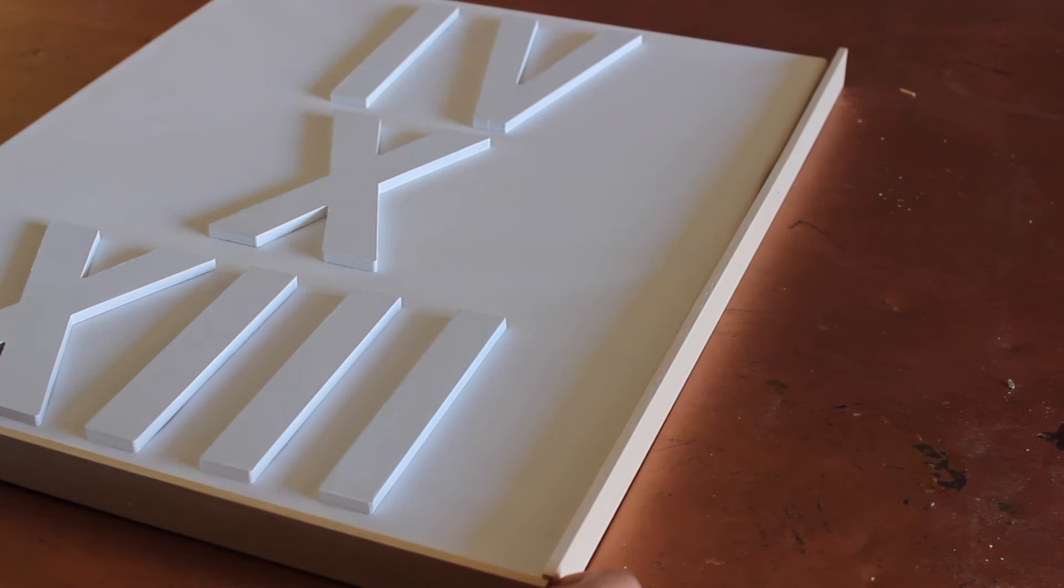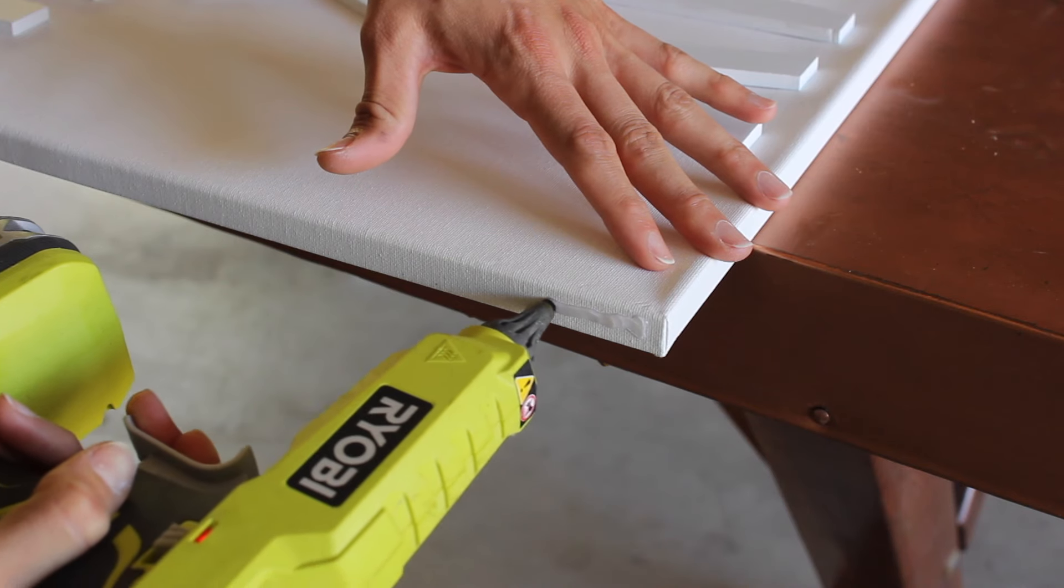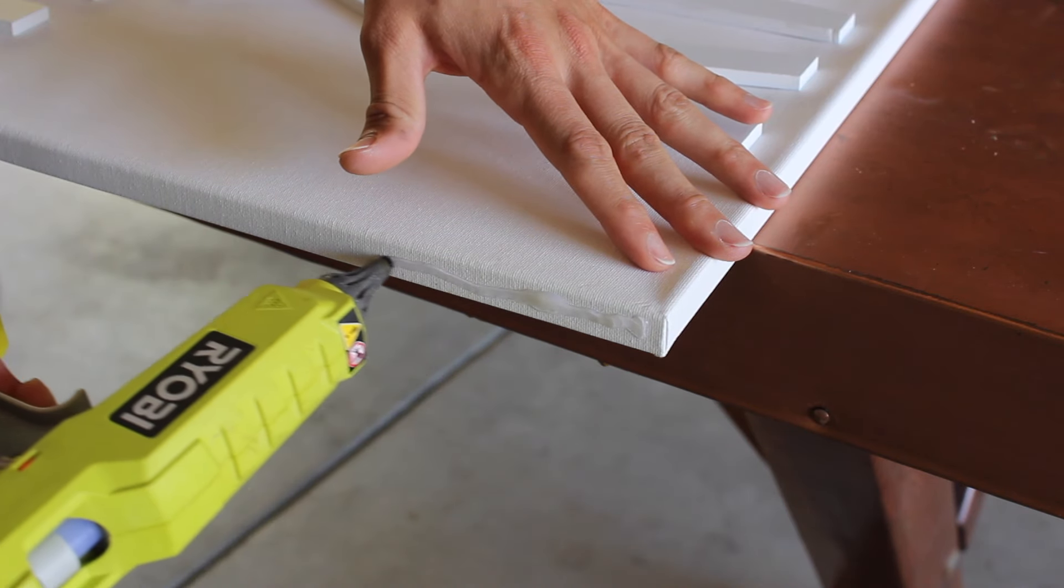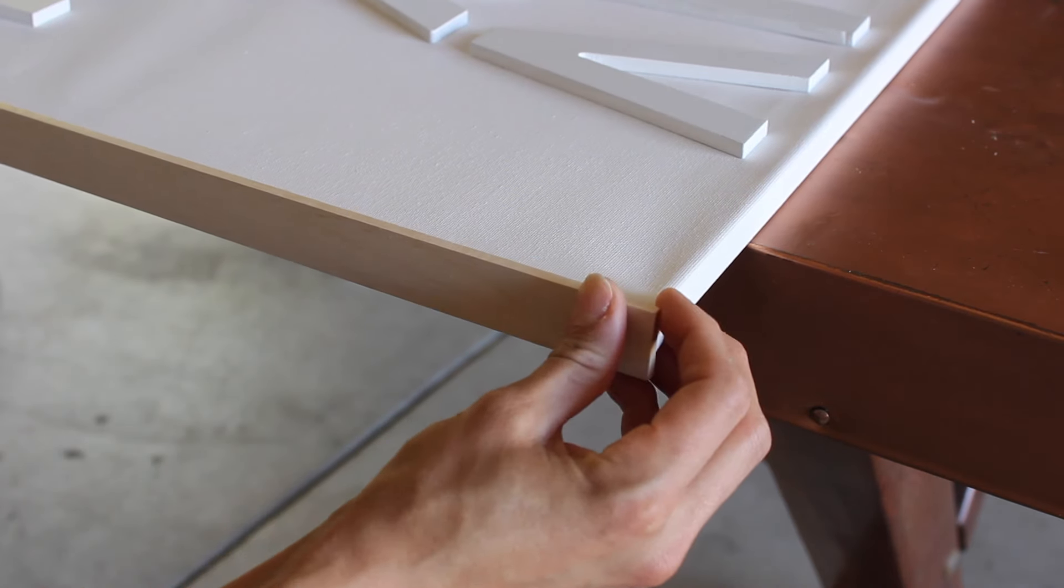So you just take the four pieces that you measured and cut earlier. You surround it around the canvas and then yes I am using hot glue. Because again this is like craft wood, it's nothing heavy duty. So I'm gluing along the edges of the canvas and then just lining up all the pieces.